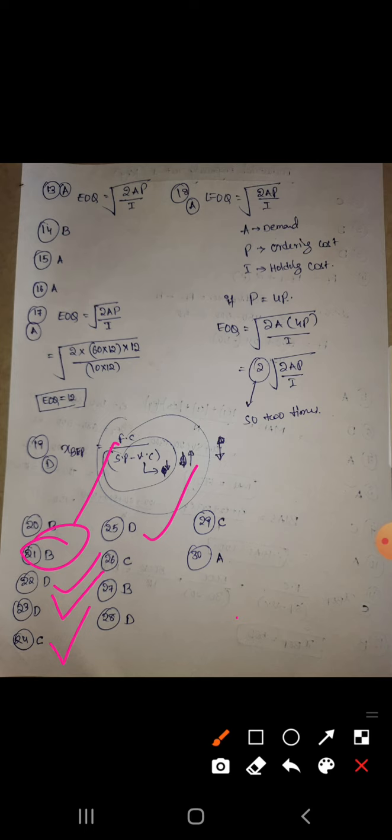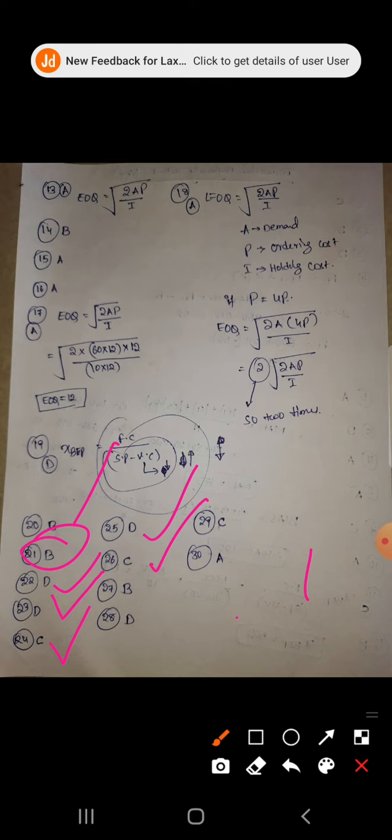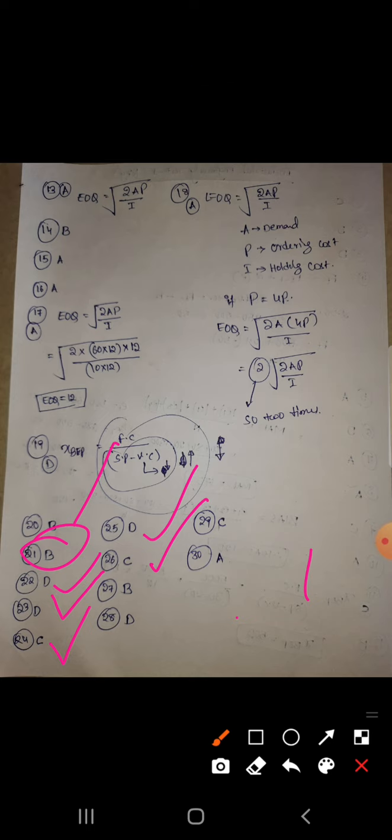Twenty-sixth question: how many lines will be there? This is m plus 2, so C is the correct answer. Twenty-seventh: if you see the match the following, that is B. Twenty-eighth is D. Leaving the variable in a simplex procedure is called degeneracy. Twenty-ninth is C, non-degenerate basic variable solution.